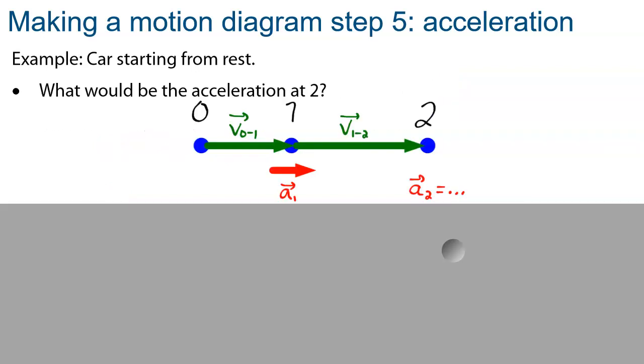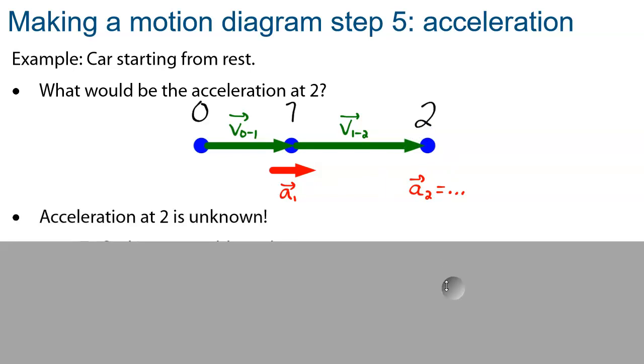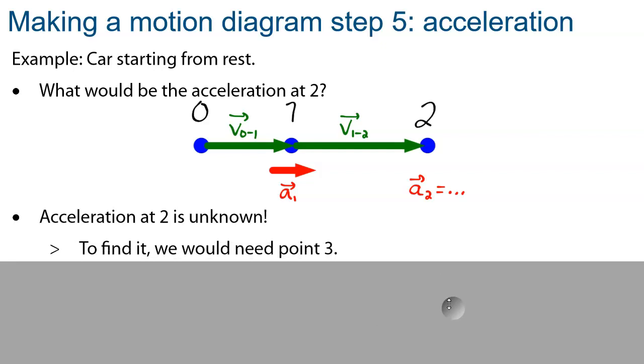So based on that, a question for you. What would be the acceleration at dot two? We found the acceleration at dot one. How could we find the acceleration at dot two now? Well, it's a bit of a trick question, because really, we cannot know what the acceleration at dot two is. And the reason is that to be able to do this, we need to know where point three will be. So depending on where dot three stands, it will affect the acceleration.